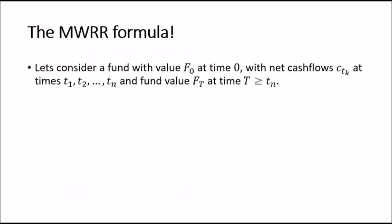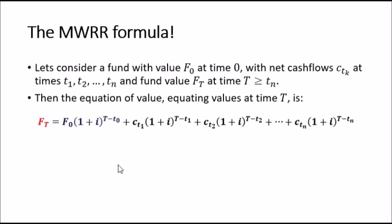Now, let's have a look at the formula itself. So let's consider a fund with a value F0, that's the value of the fund F0 at time 0, with net cash flows denoted by C at times T up to TN and fund value FT at time T, and this time T is greater than or equal to the final. So the equation of value equating at time T is given by this. So check this out for a second.